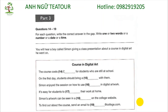You will hear a boy called Simon giving a class presentation about a course in digital art he went on. Hi. My name's Simon, and I'd like to tell you about a digital art course I went on at our local college. The course teaches you how to use digital techniques like Photoshop creatively. It's really interesting. The course lasts for five days, and anyone can sign up. For an adult, it costs £500, but there's a discount for students. University students pay £450, but if you're a school student, it's only £375. That convinced my parents to let me do it.